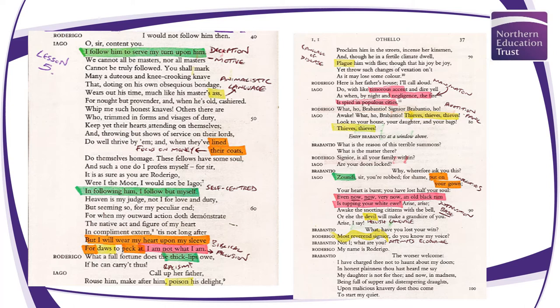'Arise, arise, awake the snorting citizens with the bell' — we know the significance of bells from Macbeth. 'Or else the devil will make a grandsire of you.' There's that hellish language Iago uses throughout, in contrast to Othello who makes many references to heaven. Brabantio responds, 'What, have you lost your wits? Most reverend señor, do you know my voice?' Here in contrast to Iago's base language, we have the higher language of Roderigo — a bit of a good cop, bad cop dynamic.